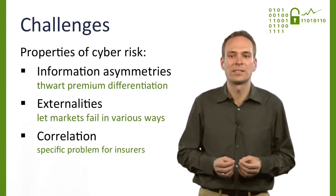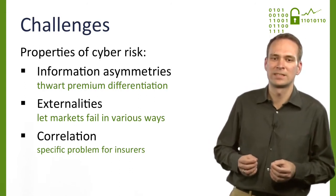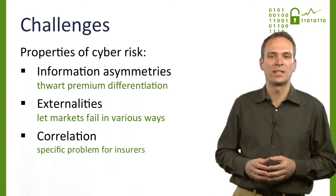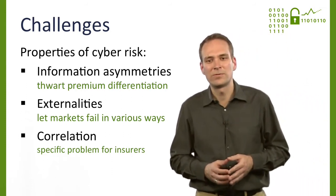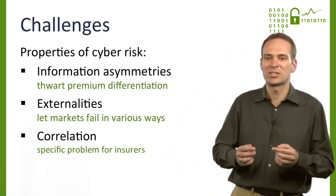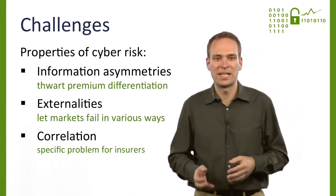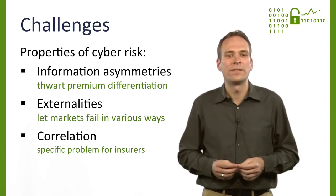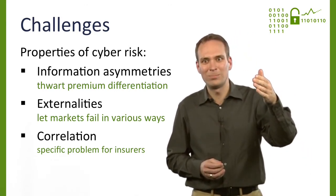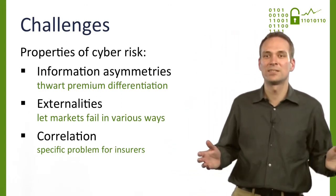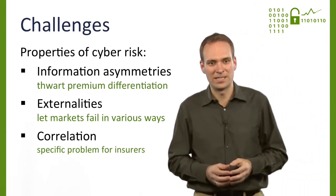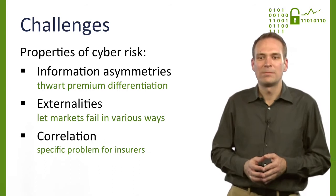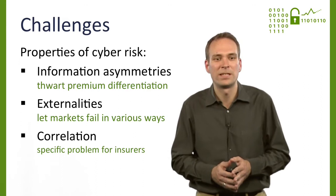What makes cyber insurance difficult to handle at large are three distinctive features of cyber risk: information asymmetries, externalities, and correlated risk. Information asymmetries impair insurance markets if insurers cannot observe the actual security level of their insureds — they are unable to tell apart good risks from bad risks, so risk-based premium differentiation cannot be enforced. Fixed premiums are either too high for good risks so they do not join the pool, or too low for bad risks, in which case the insurer is likely to go bankrupt. Externalities cause market failures in many parts of the cybersecurity ecosystem, which will be explained in a later part of the course. So let me elaborate on correlated risk, which is a specific problem for insurance and risk management at large.